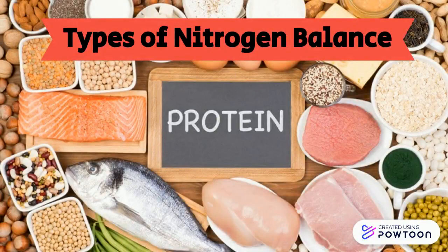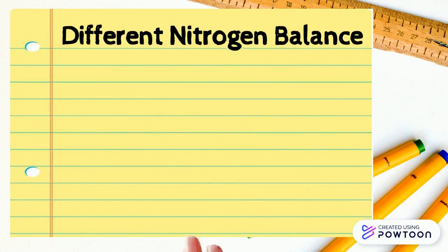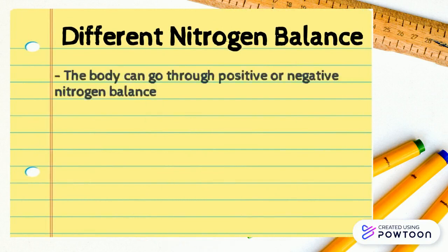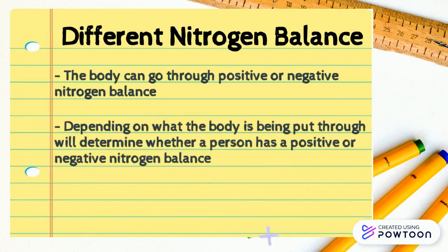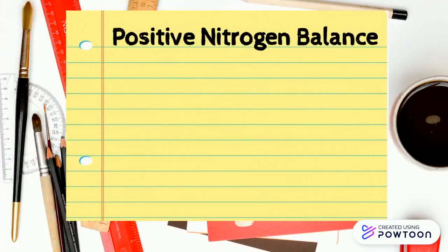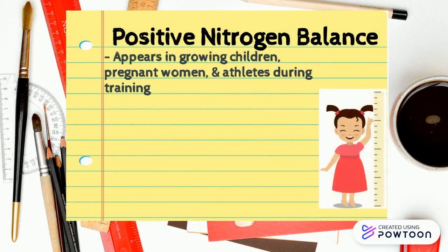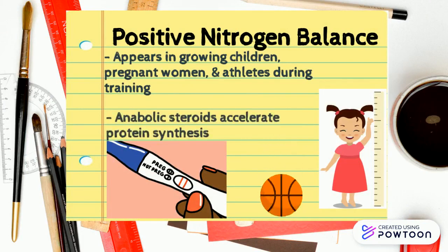Types of nitrogen balance: the body can go through positive or negative nitrogen balance. Depending on what the body is being put through will determine which type a person has. Specifically for positive nitrogen balance, it appears in growing children, pregnant women, and athletes during training.